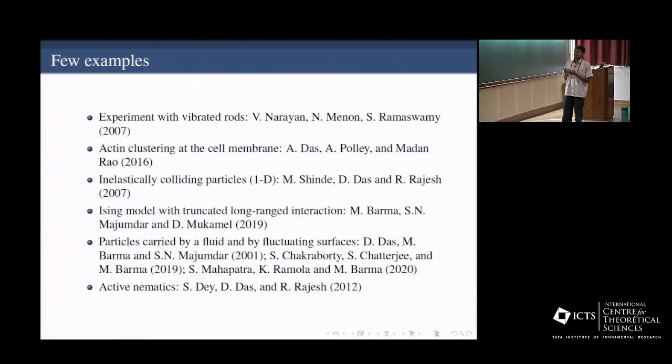So these are some examples where this kind of phase has been observed. So this is quite diverse kind of systems where you can have long-range magnets, you can have freely cooling granular gas with inelastic collisions, there are vibrated rods, there are active pneumatic systems where these kind of things are observed. So we'll be particularly concerned about a kind of model where you have particles which is driven by a fluctuating surface.